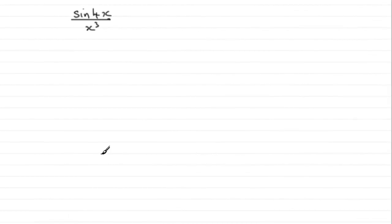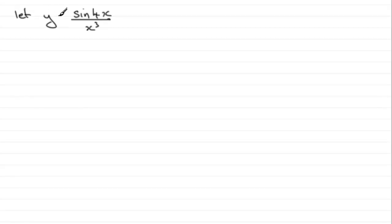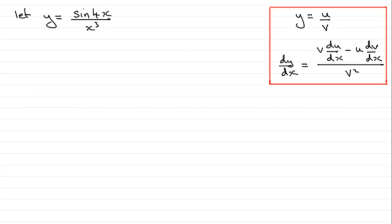For this next part we need to differentiate sine 4x over x cubed with respect to x and give our answer in as simple a form as possible. To do this, I'll define it: let y equal sine 4x over x cubed. What we have here is two functions of x being divided by one another, so it's a good idea to use the quotient rule.